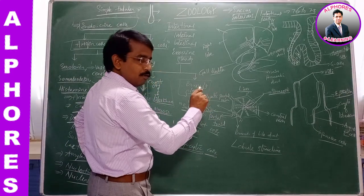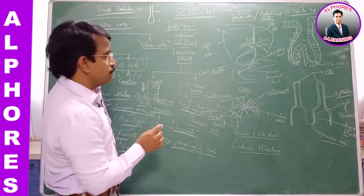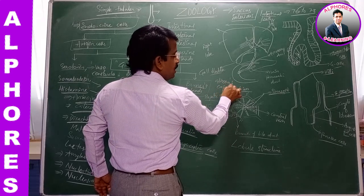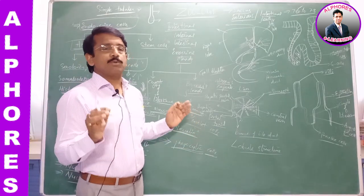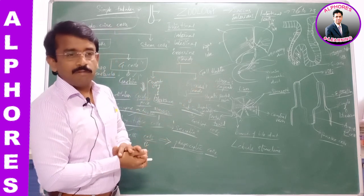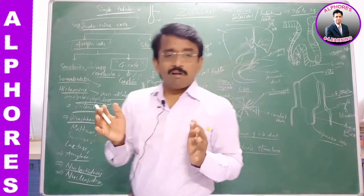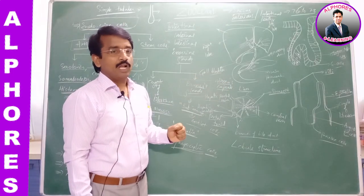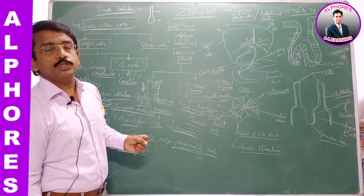One lobule is separated from another lobule by means of a loose connective tissue sheath called Glisson's capsule. Glisson's capsule is the loose connective tissue that separates one hepatic lobule from another. This is how the many lobules are accommodated within the liver. The hepatic lobules are considered to be the structural and functional units of the liver.